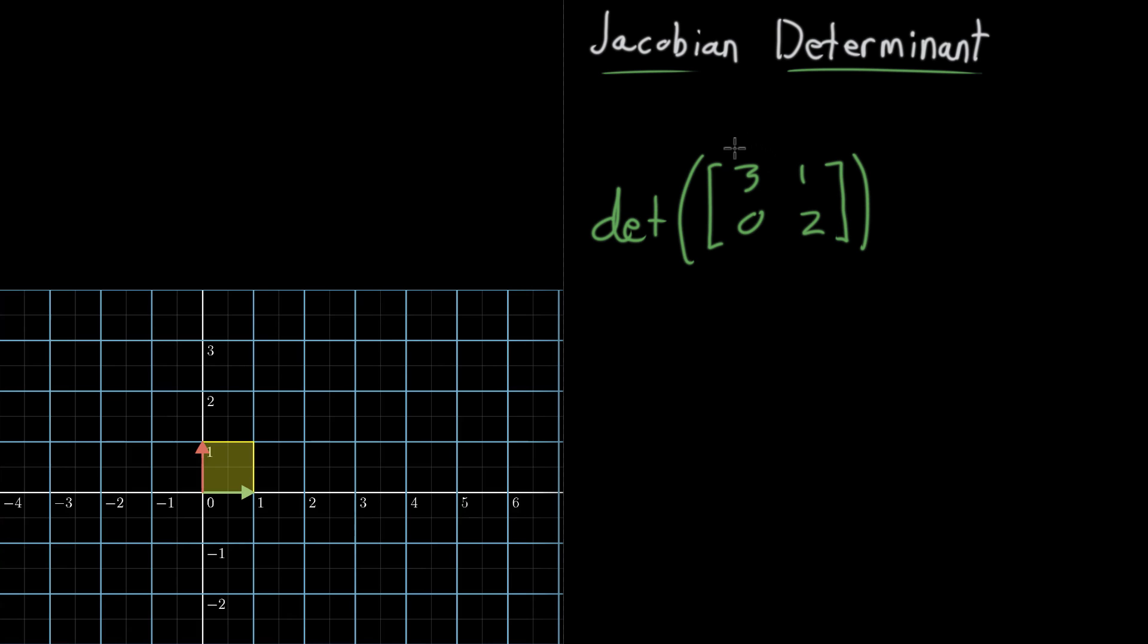To compute the determinant, you take these diagonal terms here, so you take 3 multiplied by that 2, and then you subtract off the other diagonal—subtract off 1 multiplied by 0. And in this case, that evaluates to 6.